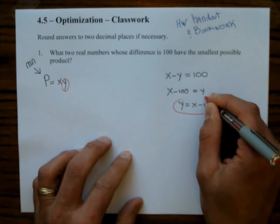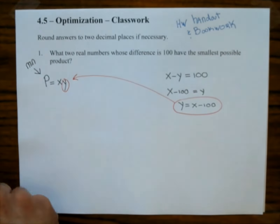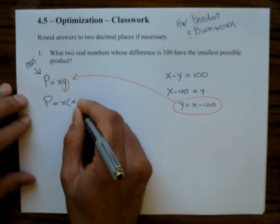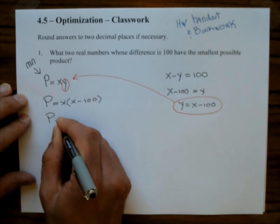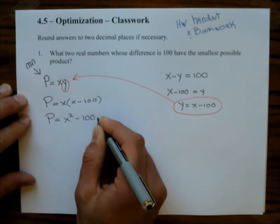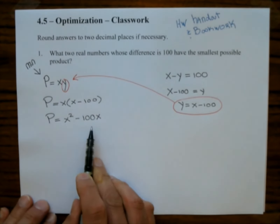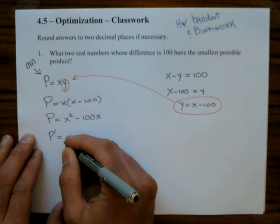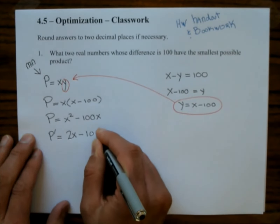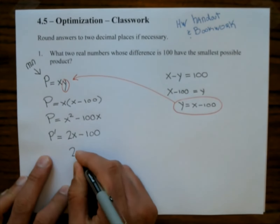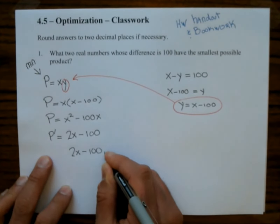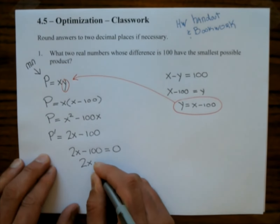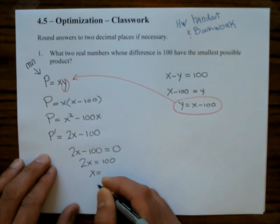I'm going to plug Y equals X minus 100 into the product. So P equals X times (X minus 100). Distributing gives X squared minus 100X. Since I'm trying to find the minimum, I take the derivative: dP/dX equals 2X minus 100. I find critical numbers by setting it equal to zero: 2X equals 100, so X equals 50.